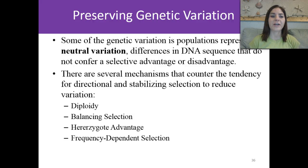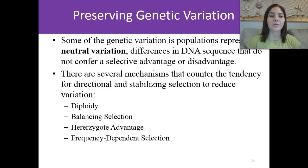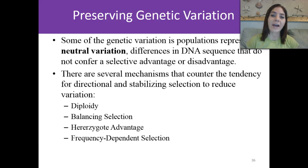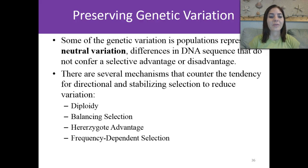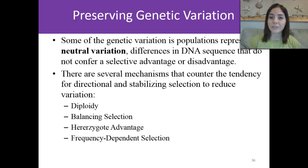So, preserving genetic variation. Some of the genetic variation in a population represents neutral variation — differences in the DNA sequence that don't confer a selective advantage or a selective disadvantage. There are several mechanisms that can counter the tendency for directional or stabilizing selection to reduce variation. These include diploidy, balancing selection, the heterozygote advantage, and frequency-dependent selection.